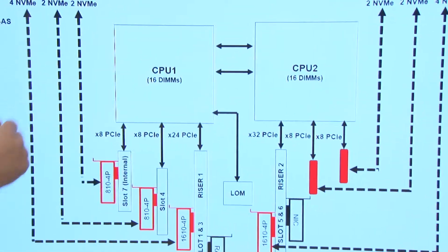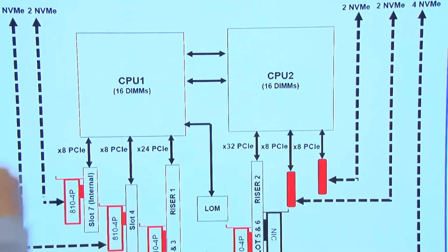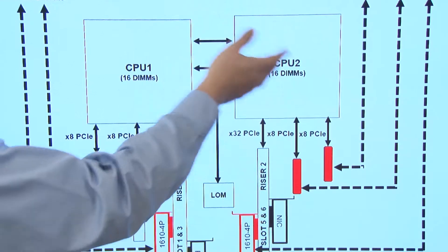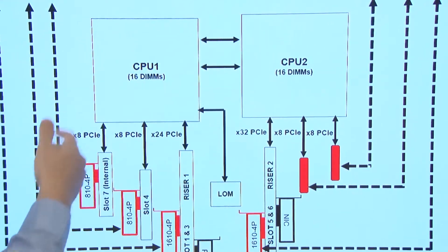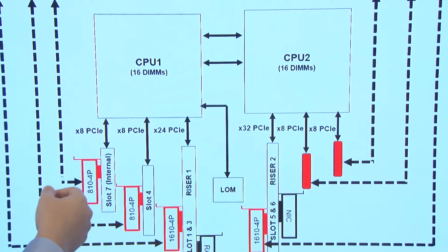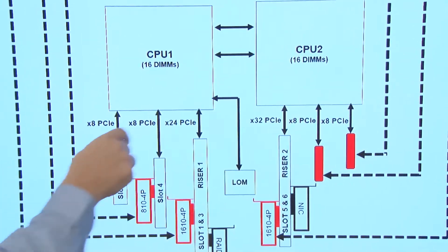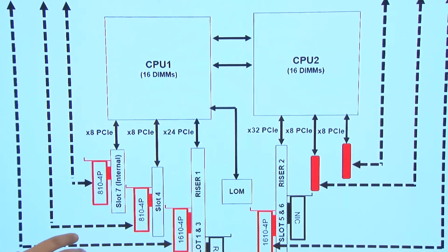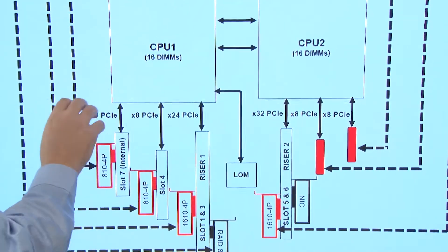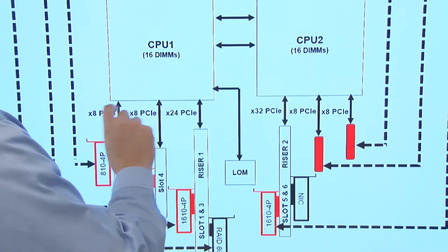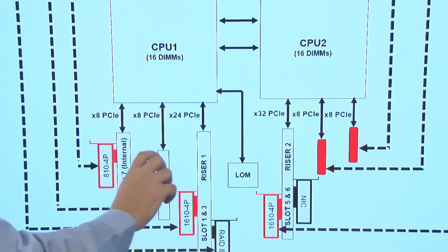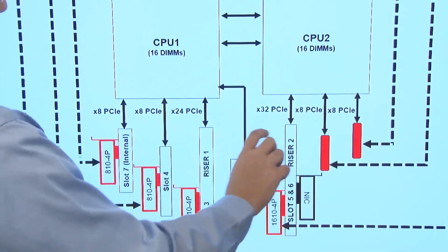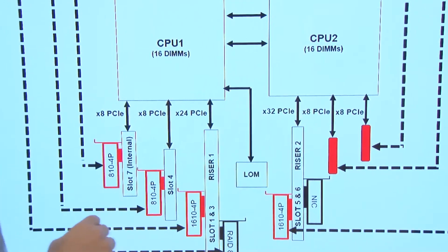So then how do these drives connect to the CPUs? Yes, so the block diagram here is showing a two socket SR650 system, CPU1 and CPU2, they're interconnected together with Intel's Ultrapath Interconnect bus, or known as the UPI. We have everything else shown here, we're going to describe the PCI topology of the system.